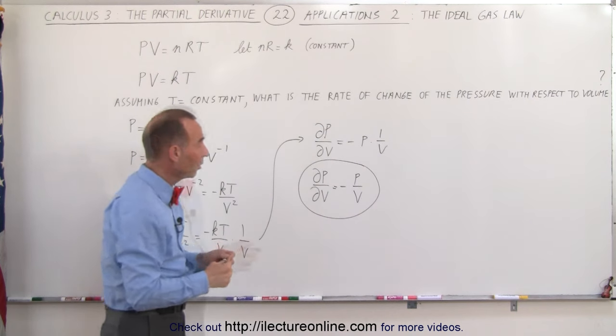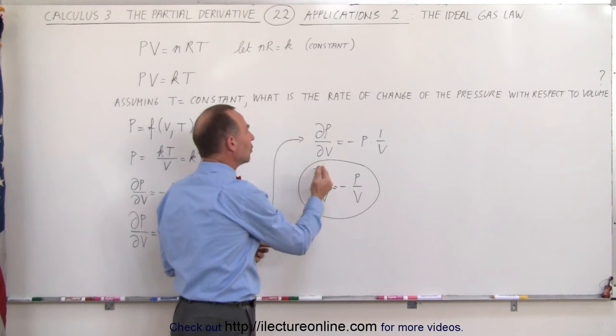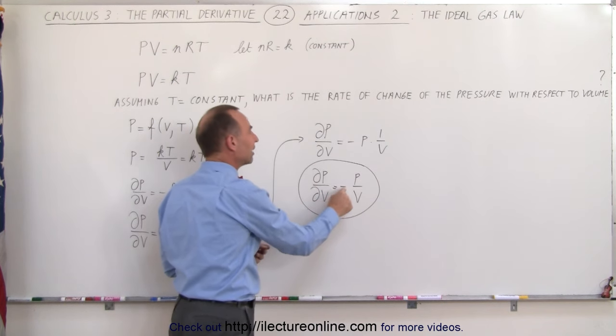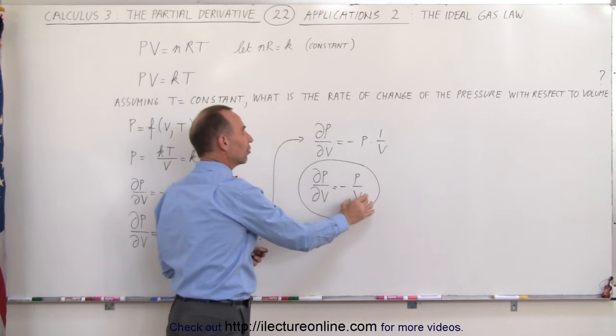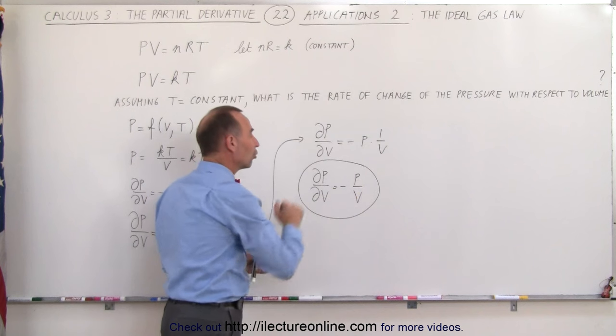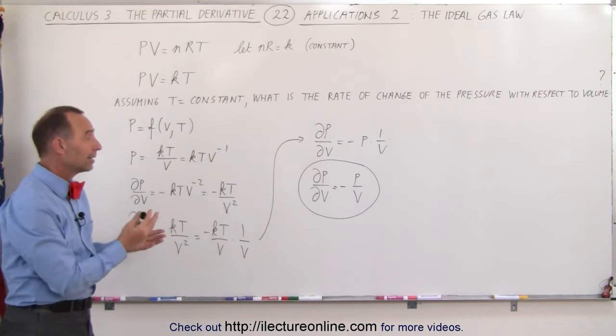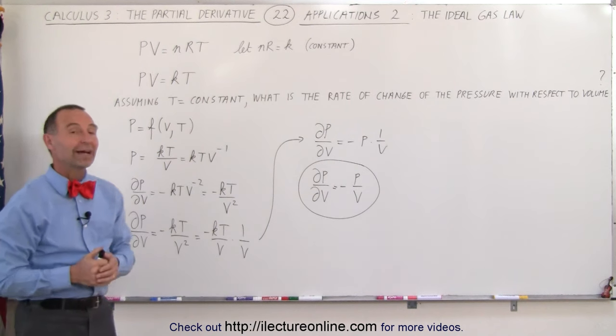Now, how does it make sense? An increase in the volume will then be a decrease in the pressure, because the rate of change of the pressure with respect to the volume is going to be negative P over V. V is small, the ratio will be large. If V is large, the ratio will be small.